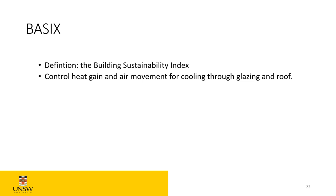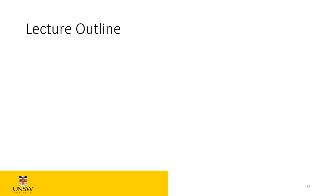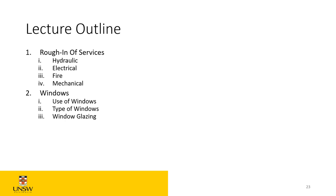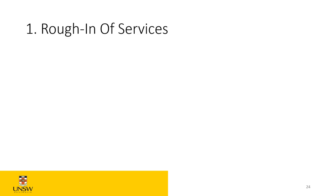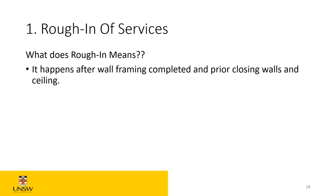Today's lecture covers roughing in, window types, and door types. Roughing in is a new term — it happens after your wall framing. Once you strip your formwork, put your stud and track framing, and before you put your sheeting or close your walls and ceiling, you do the roughing in. In simple terms, it's all the wiring, ducting, and pipes that go inside the wall prior to closing those surfaces.